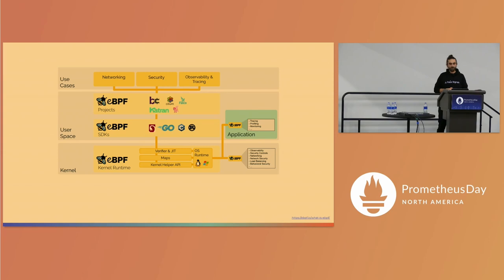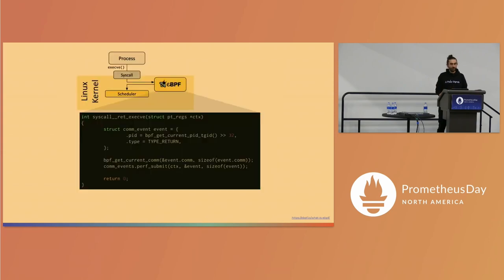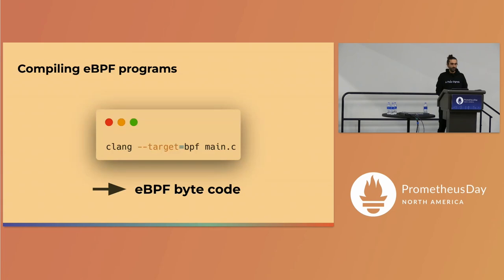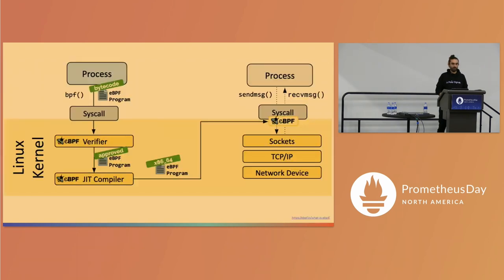Here's an example of a simple eBPF program that hooks into a syscall — it's written in C. You can use C and Clang to compile it, or alternatively Rust, which partially supports it with ongoing work. You change your target with Clang, give it a C program using special eBPF headers, and then load the bytecode into the kernel's eBPF virtual machine.